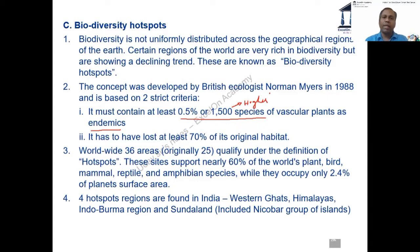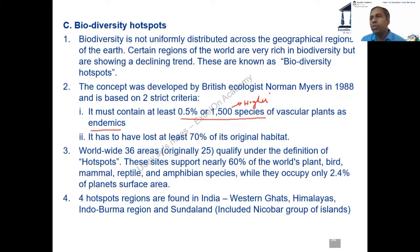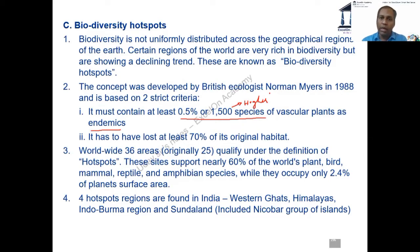For example, if a region has one lakh species of vascular plants, then 0.5 percent of one lakh comes to 500 species. In that case, 500 is less than 1500, so it would not qualify as a biodiversity hotspot — it needs to be more.